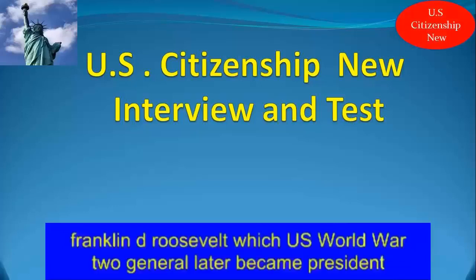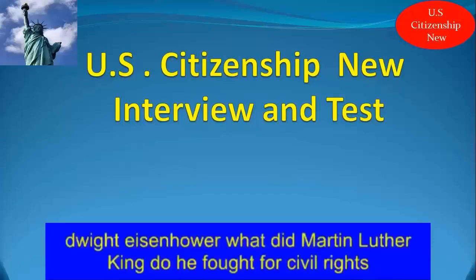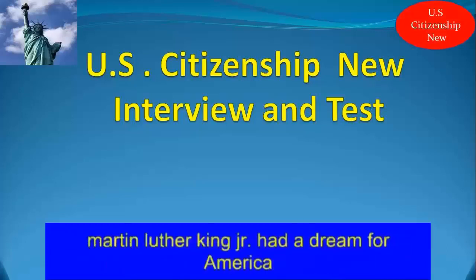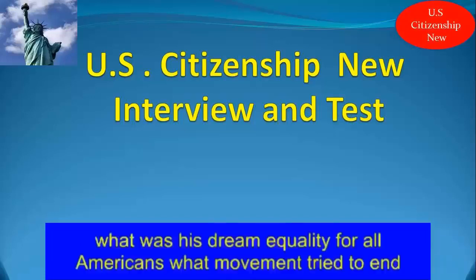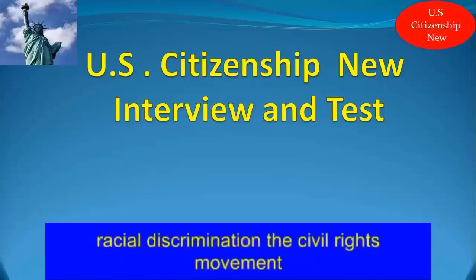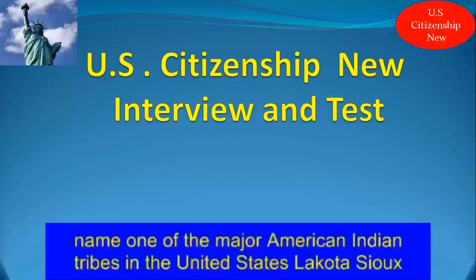Who was President during the Great Depression and World War II? Franklin D. Roosevelt. Which U.S. World War II general later became President? Dwight Eisenhower. What did Martin Luther King do? He fought for civil rights. Martin Luther King Jr. had a dream for America. What was his dream? Equality for all Americans. What movement tried to end racial discrimination? The Civil Rights Movement. Name one of the major American Indian tribes in the United States. The Lakota Sioux.